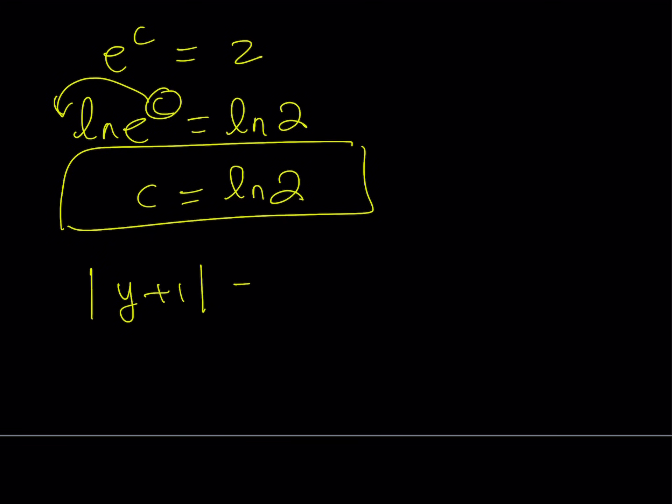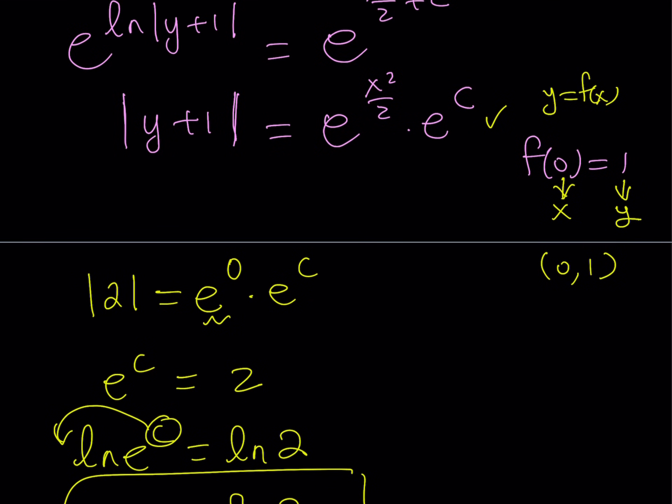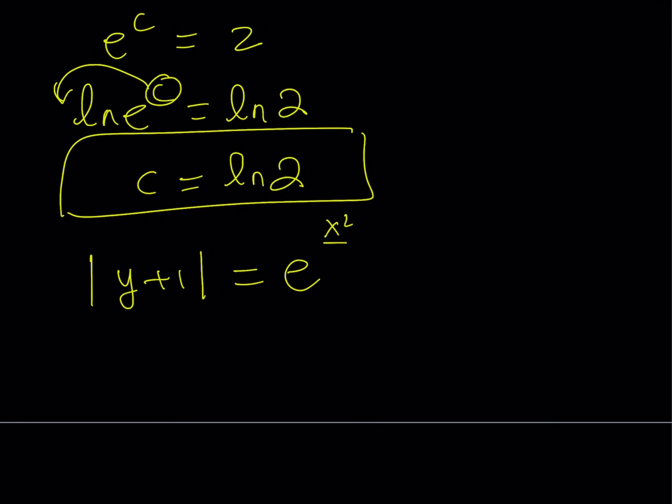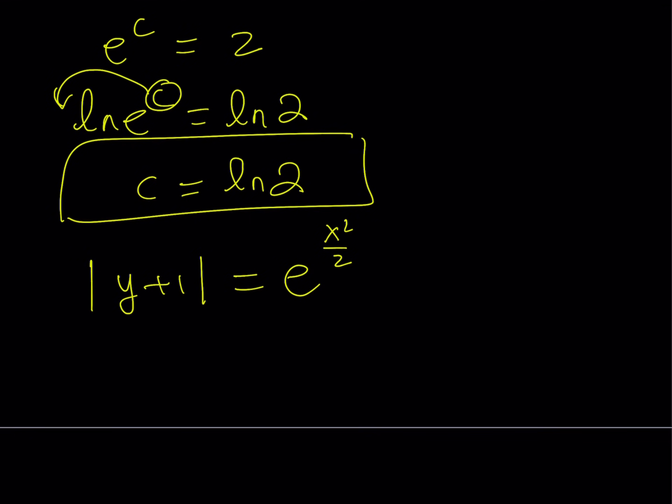The absolute value of y plus 1 equals e to the power x squared over 2. That's unchanged. And then we have times e to the power c. Of course, we've done some work and then we're going to reverse it. That's not necessary. But it doesn't always work that way. That's why I wanted to show you how to find the c from here. And now the next step is just going to be y plus 1 can be written as e to the power c. We're going to replace c with ln 2. And this is going to give us e to the power ln 2, which is equal to 2. But we didn't need to do any of this. This is equal to 2 because we already knew that e to the power c is equal to 2 from here.